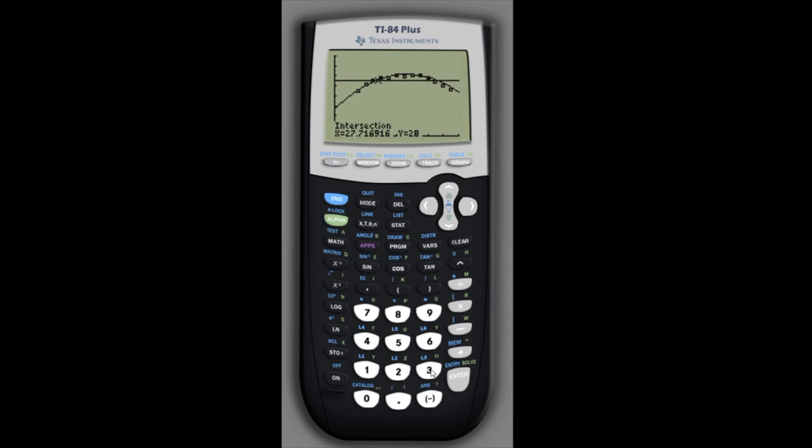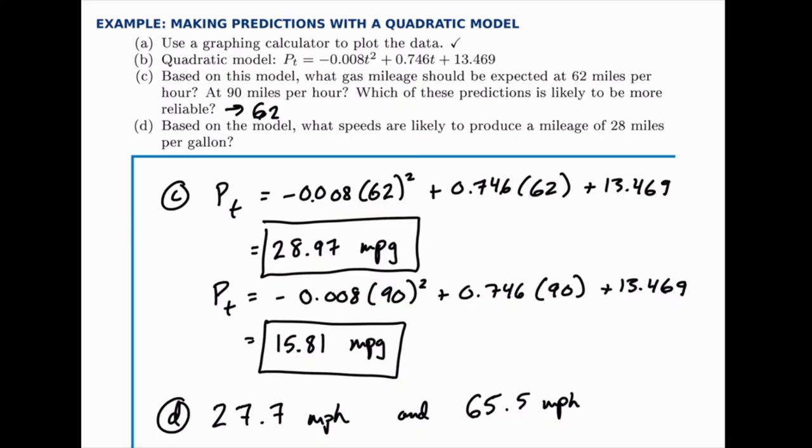So the first speed is 27.7 miles per hour, and then we can do the same thing with the other intersection. Hit second TRACE again and then select number 5 for the intersect option. Now scroll over closer to the right-hand intersection, hit enter three times, and that turns out to be when x is about 65.5 miles per hour. So the two speeds that are likely to produce a mileage of 28 miles per gallon are 27.7 and 65.5 miles per hour.